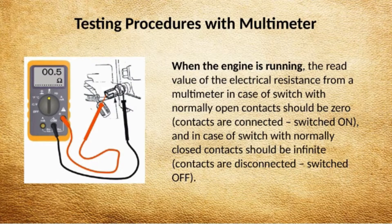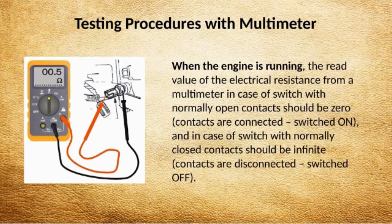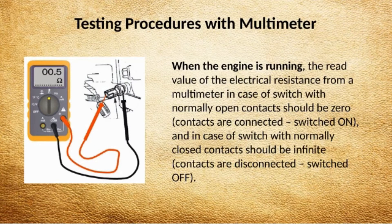When the engine is running, the multimeter resistance reading for a normally open switch should be 0 — contacts are connected, switched on — and for a normally closed switch should be infinite — contacts are disconnected, switched off. If you enjoyed watching this video, click the like button or provide your comment below. Thank you.